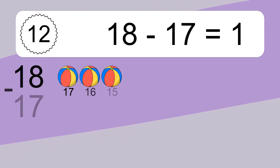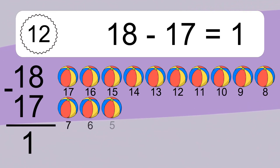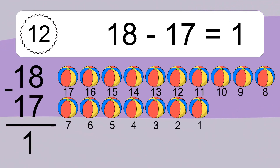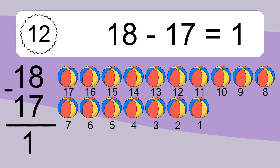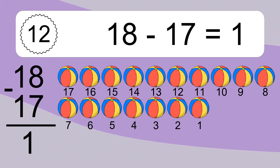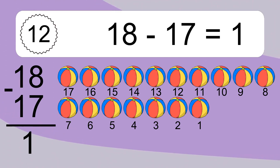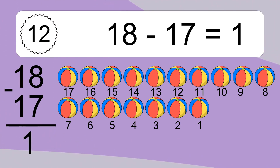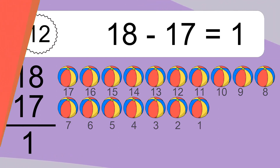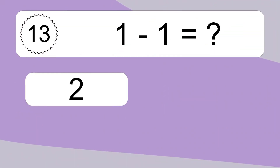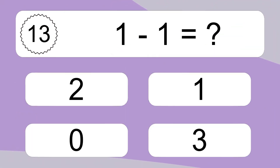18 minus 17 equals what? 18 minus 17 equals 1. Let's count it: 17, 16, 15, 14, 13, 12, 11, 10, 9, 8, 7, 6, 5, 4, 3, 2, 1.